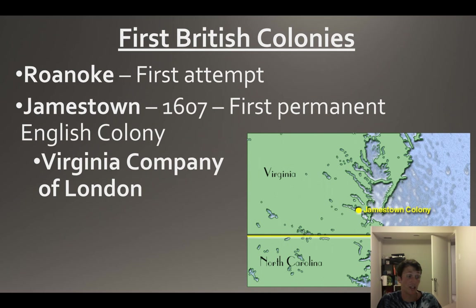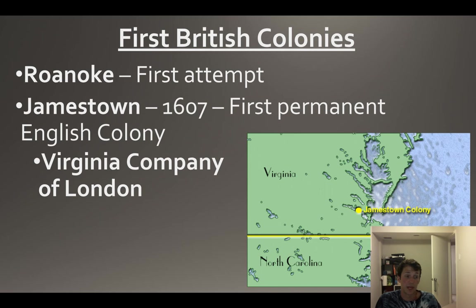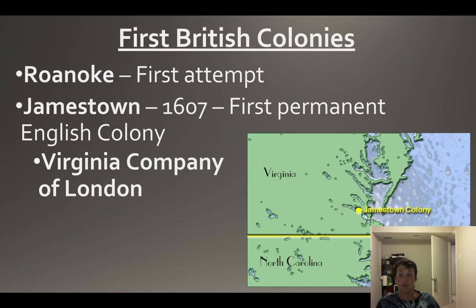The first British colony attempt is the colony known as Roanoke, on the coast of North Carolina. It doesn't go particularly well - it's the lost colony, it just disappears. Some of the main leaders had to go back to England for supplies, and when they came back the colony had disappeared and all the people were gone. They're not sure what happened - could be Native Americans, could have moved inland. They're actually trying to figure it out through DNA evidence.